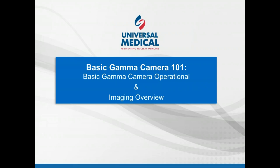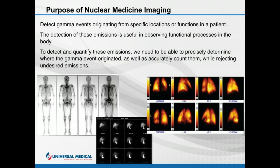Welcome everybody. Today we are going to be talking about the basics of gamma cameras — basic gamma camera operation, some concepts of corrections, and how a camera functions. The purpose of nuclear medicine, starting at the real basics, is to be able to look at specific functions or organs in a patient and use gamma rays to determine their state. The detection of these emissions is what we use to determine if a process is working properly or not functioning properly.